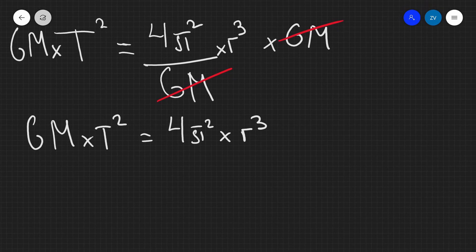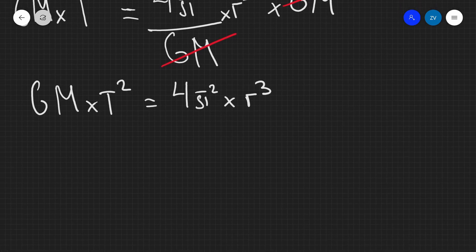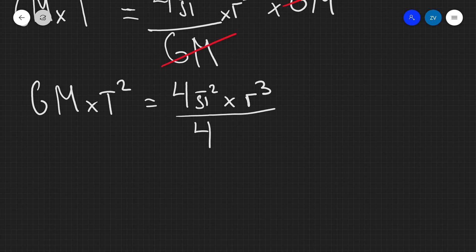Now, the next step, when I'm trying to rearrange for π, would be just to rearrange for π². In order to do so, I'm going to need to divide this side by 4r³, and because I have divided the right-hand side by this, I'm going to need to divide the left-hand side by this as well. So, I'm going to divide this by 4r³, and notice that this is going to cancel with that, and r³ is going to cancel with r³. So, all I'm left with is that π² is equal to GMT² divided by 4r³.